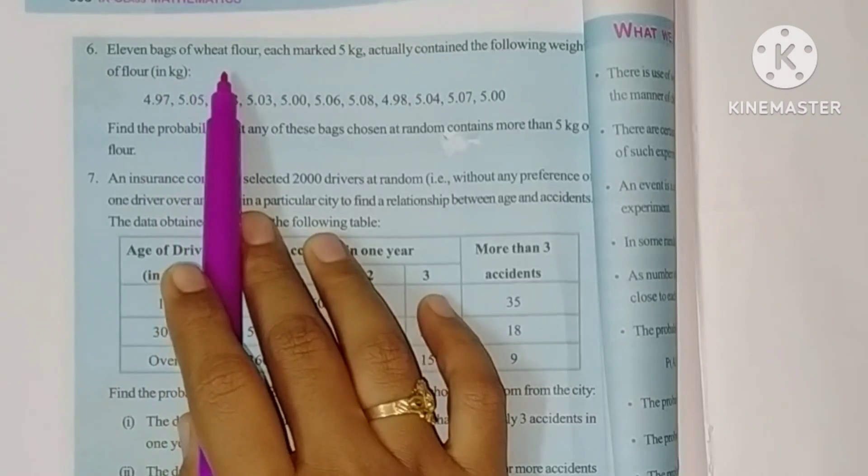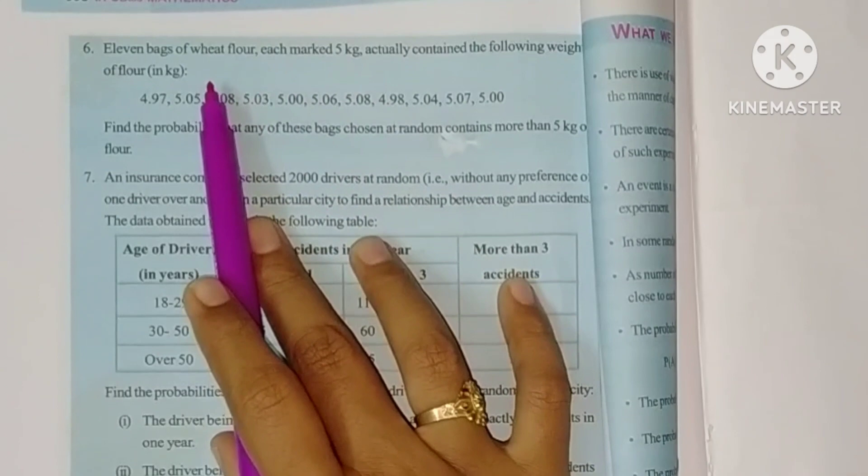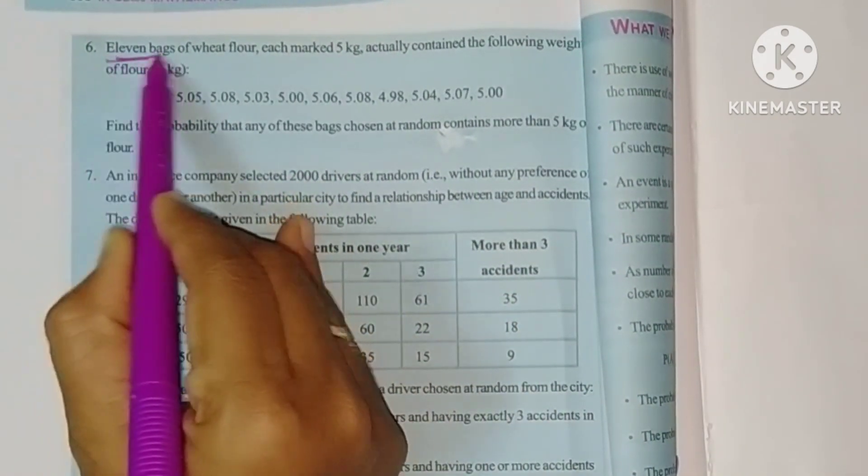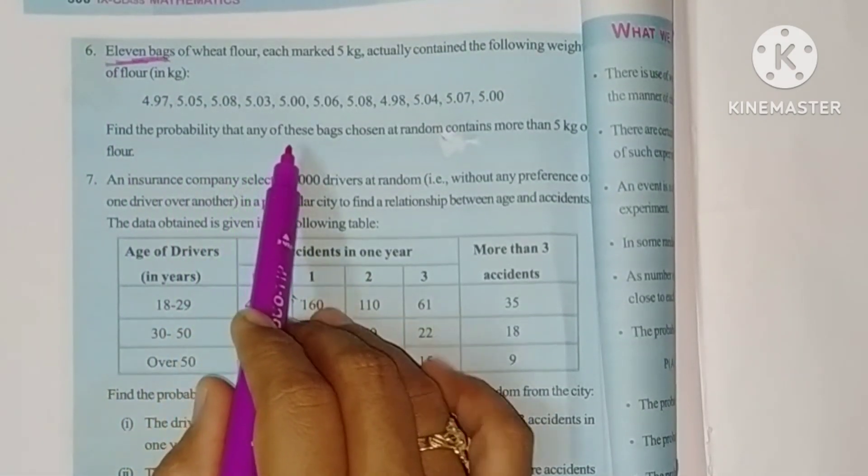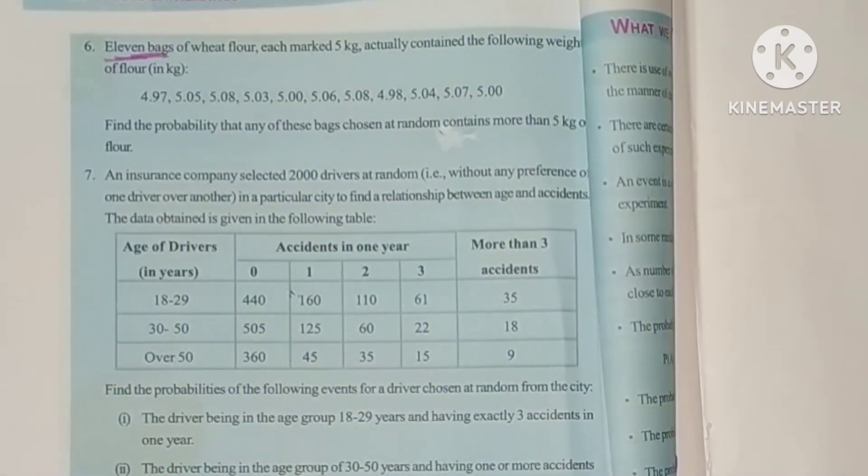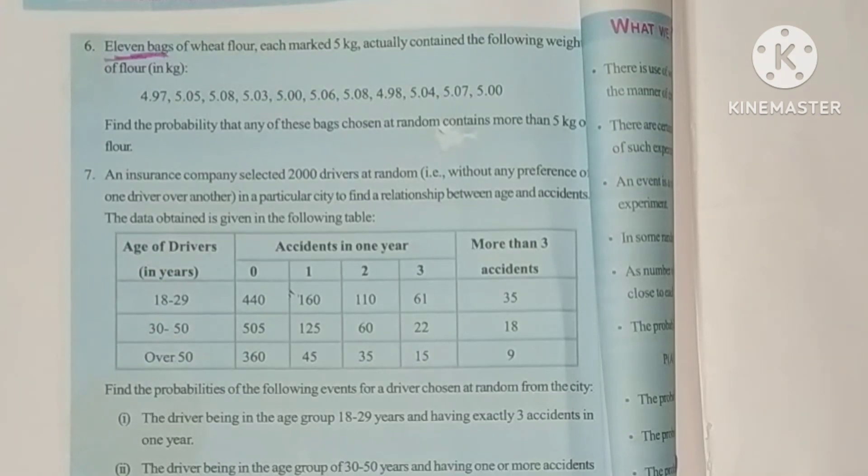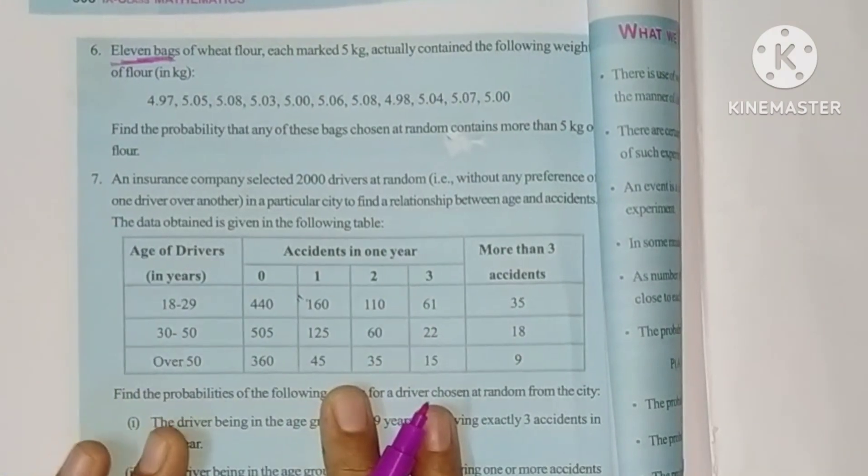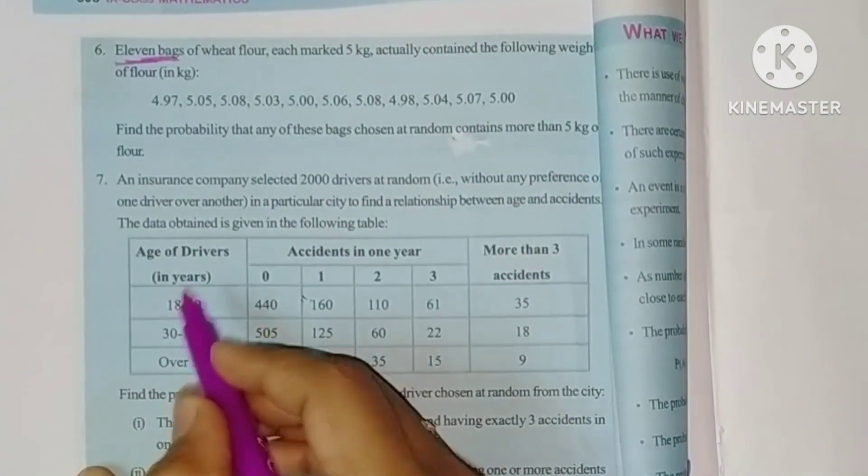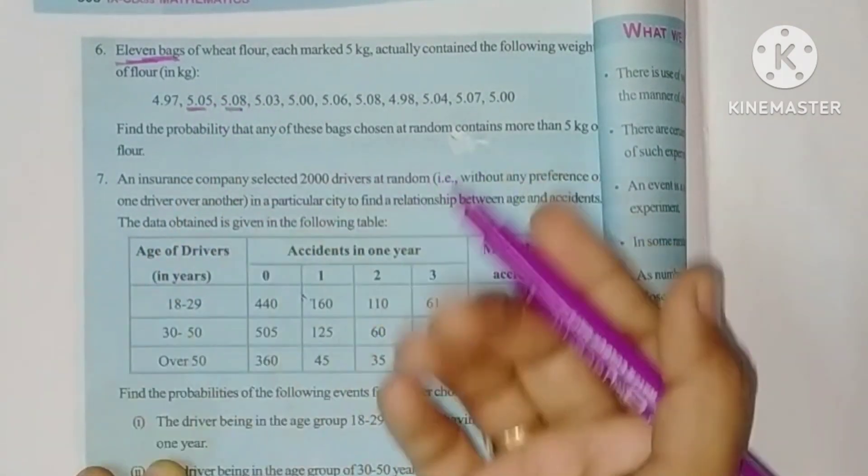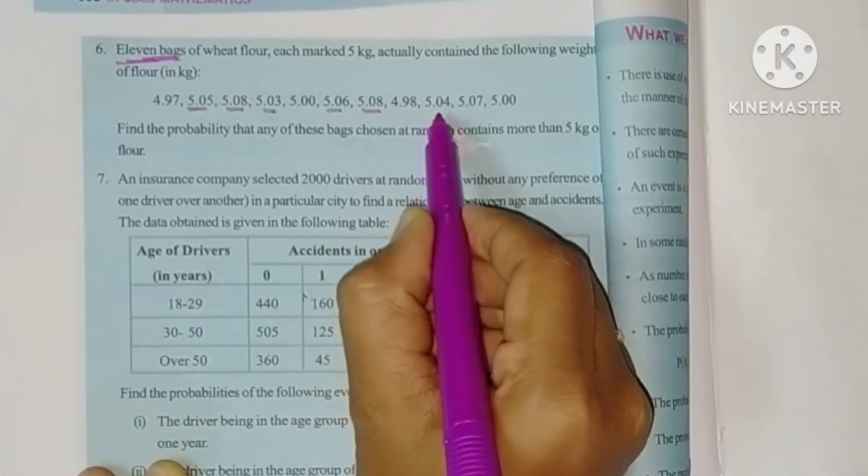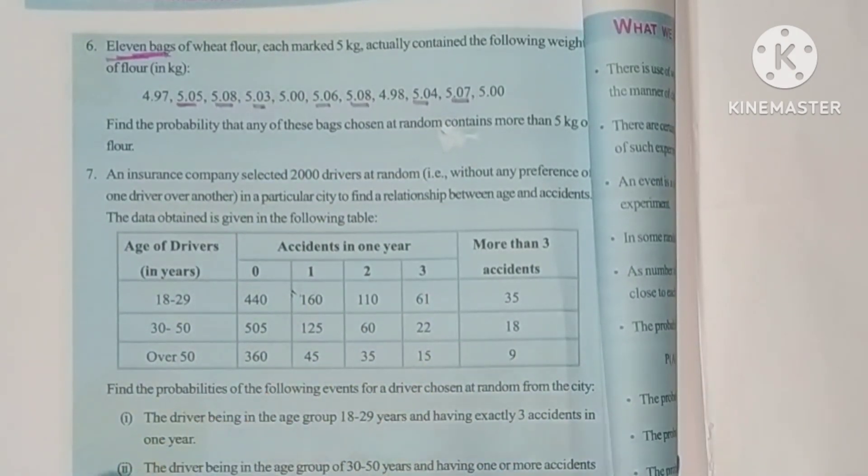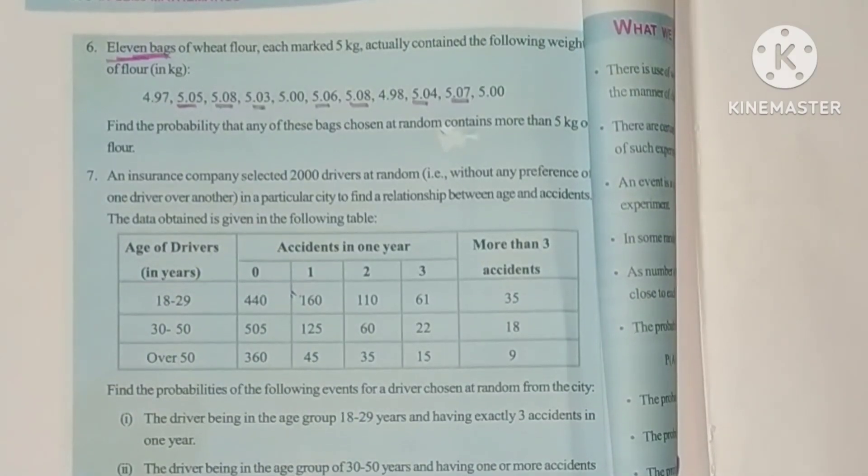Sixth problem: 11 bags of wheat flour, each marked 5 kg, actually contain the following weights of flour. So total number of bags is 11, that means total outcomes. Find the probability that any of these bags chosen at random contains more than 5 kg. So probability formula is number of favorable outcomes by total number of outcomes. Favorable: greater than 5 kg, there are seven bags. So that means number of favorable outcomes is 7, total is 11. So it's simply 7 by 11.